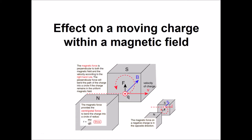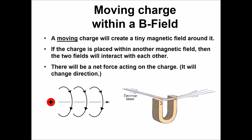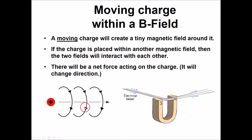Today we're going to look at what happens when a charge moves through a magnetic field and analyze that case. First, let's think about a moving charge — there's going to be a little mini magnetic field around it. In the case of a positive charge, you'd have a clockwise motion; for a negative charge, it's going to be the opposite.